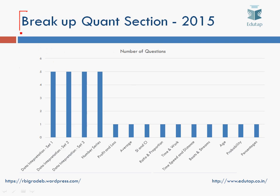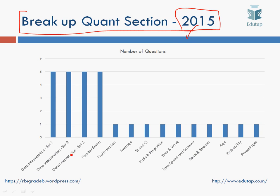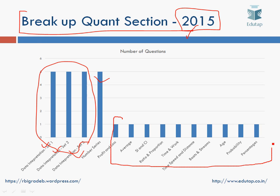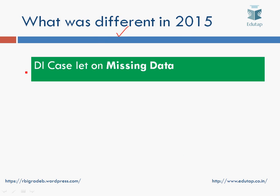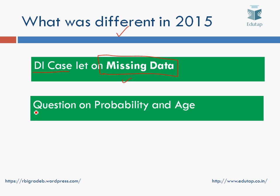Now let us discuss the breakup of the quant section for 2015. In 2015 there were three caselets for DI — 15 questions out of 30 were based on three caselets of five questions each. There were also five questions on number series and one question each on general topics. Notably, there was a DI caselet on missing data, a question on probability, and a question on age.